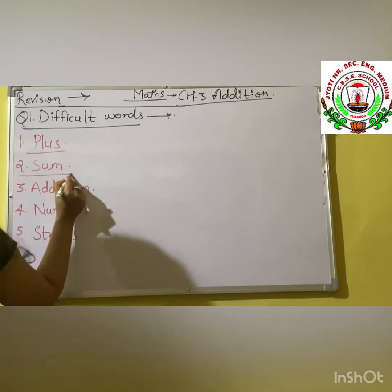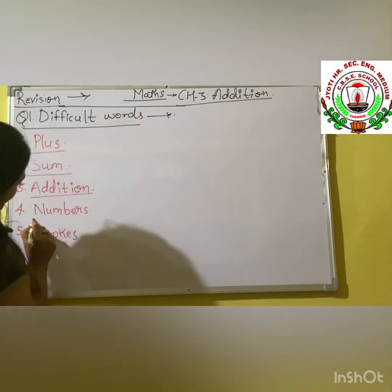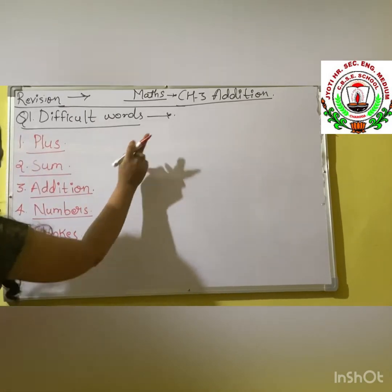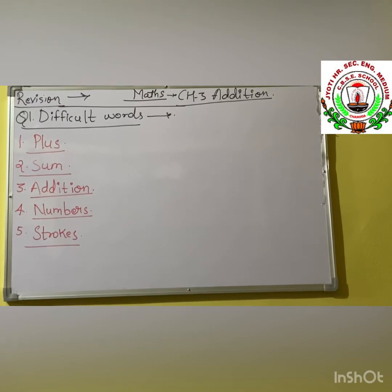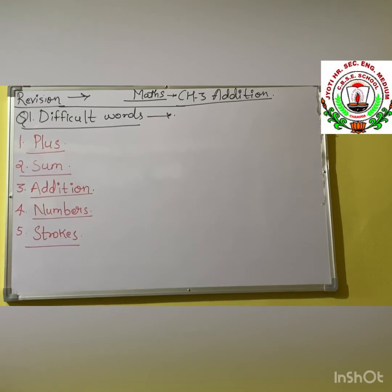So these are your 5 difficult words from chapter number 3, addition. You have to write these difficult words 2 times in your maths copy. First one is: plus. Second one is: sum. Third one is: addition. Fourth one is: numbers. And fifth and last one is: strokes.